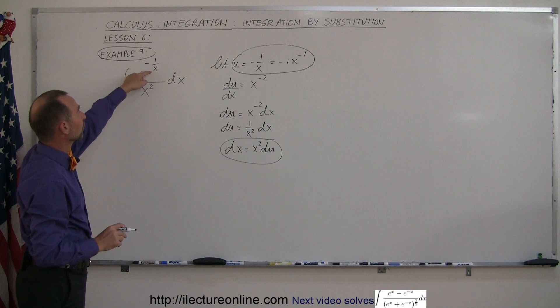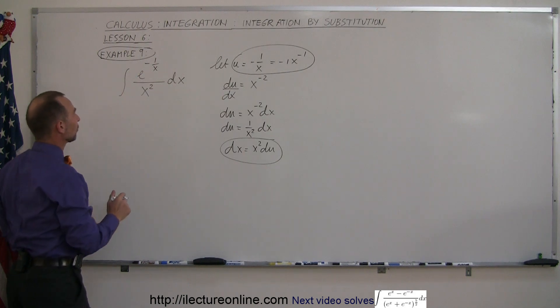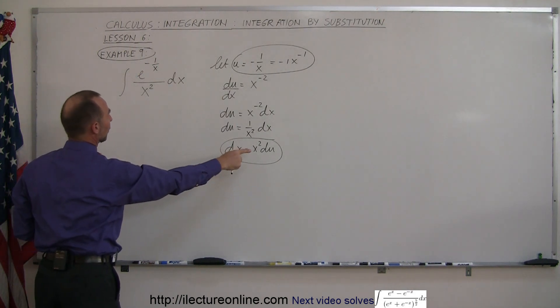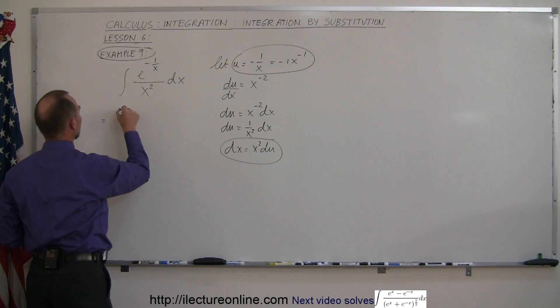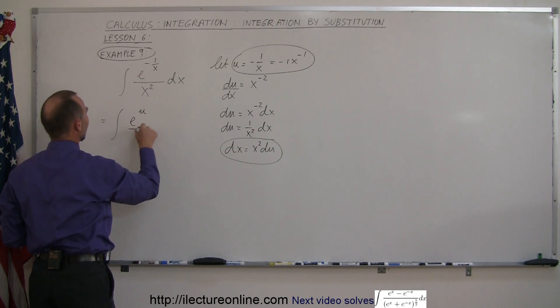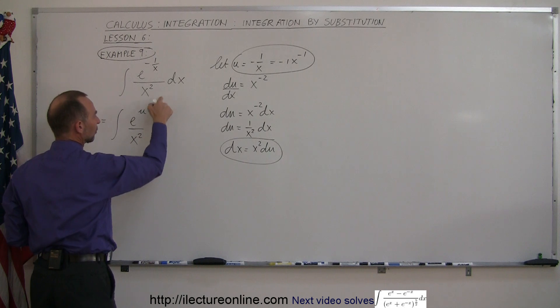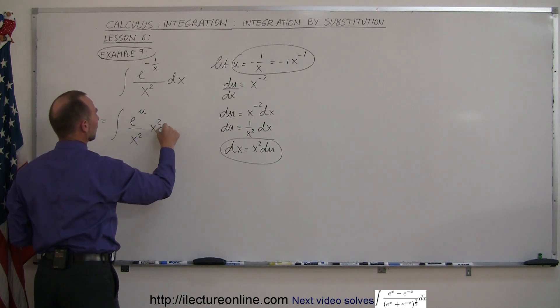So instead of writing minus 1 over x, we're going to write u, and instead of dx, we're going to write x squared du. So this can now be written as the integral of e to the u divided by x squared, and instead of dx, we write x squared du.